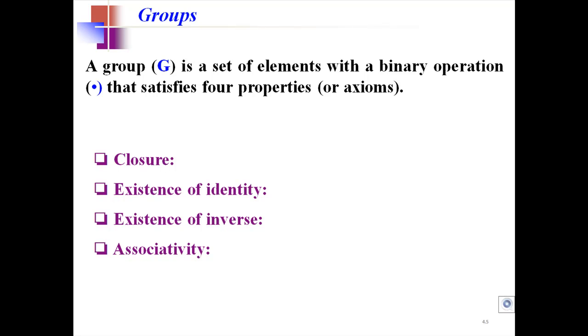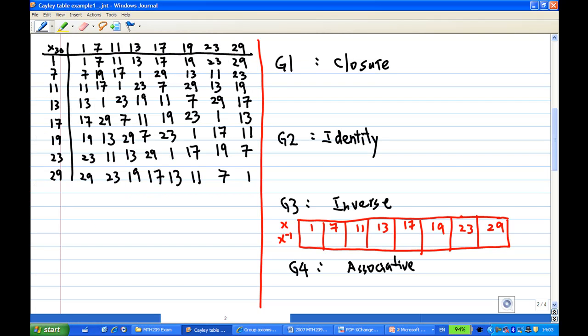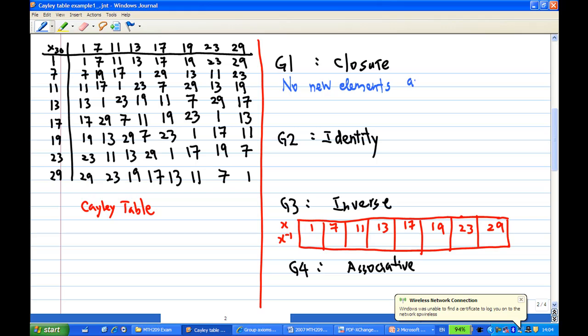So let's handle each case one by one. We have already constructed the Cayley table on the left. Now how do we know that the first property closure is satisfied? I notice that in the Cayley table we don't have new elements, so no new elements are needed to complete the table, therefore closure is satisfied.